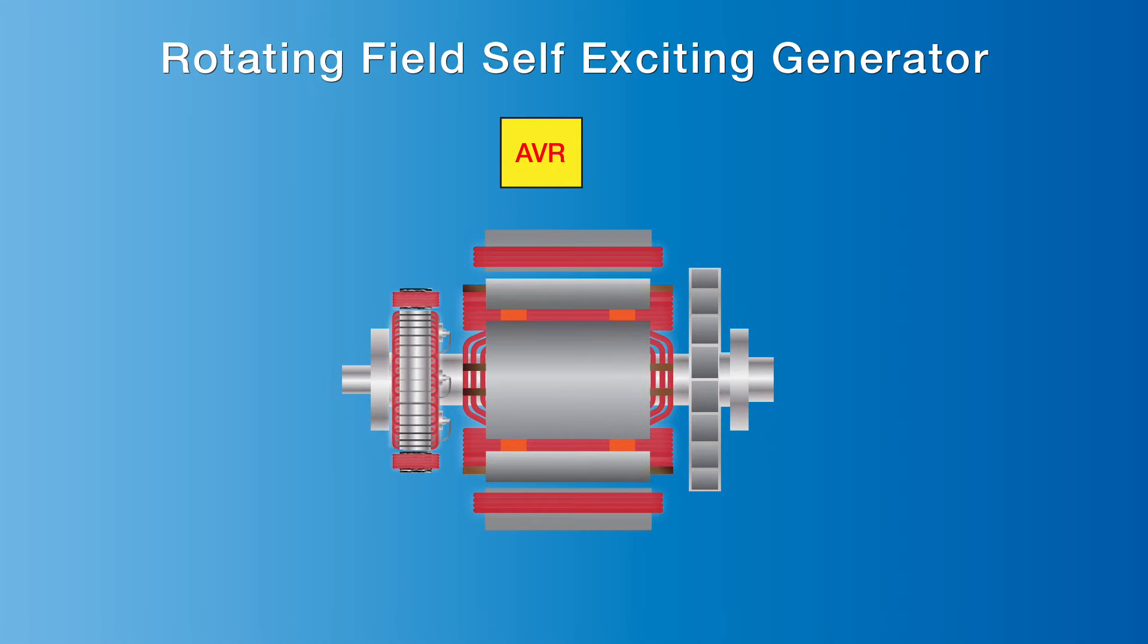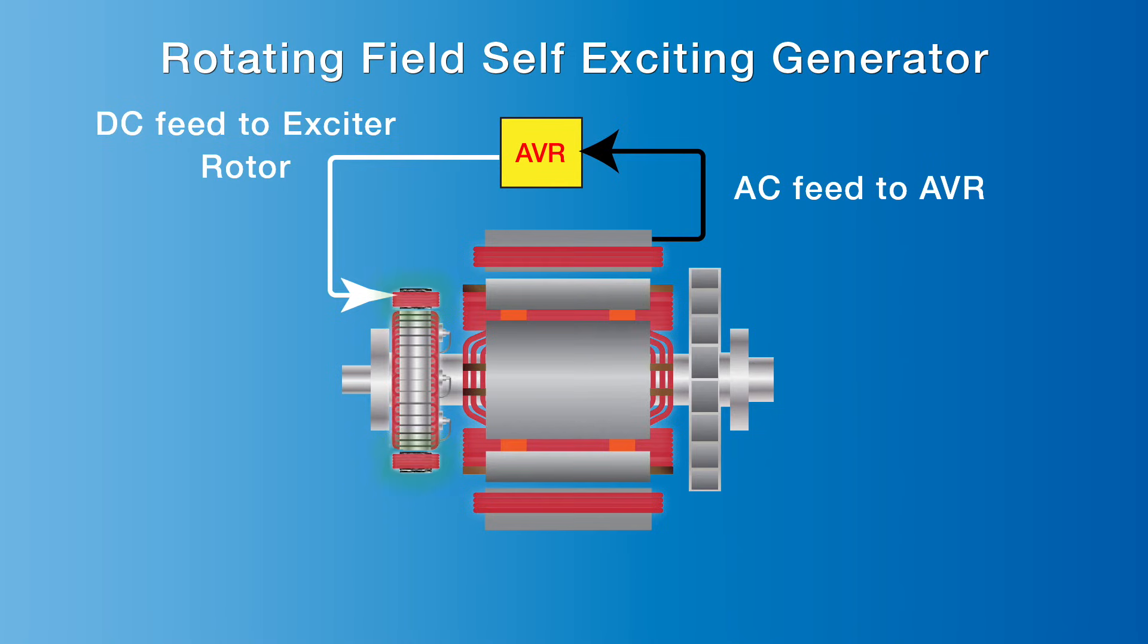In a self-excited AVR system, AC reference voltage is fed from the stator to the AVR. The AVR converts the AC current to DC and feeds this current to the exciter stator coils, which generates a magnetic field around the stator coils.